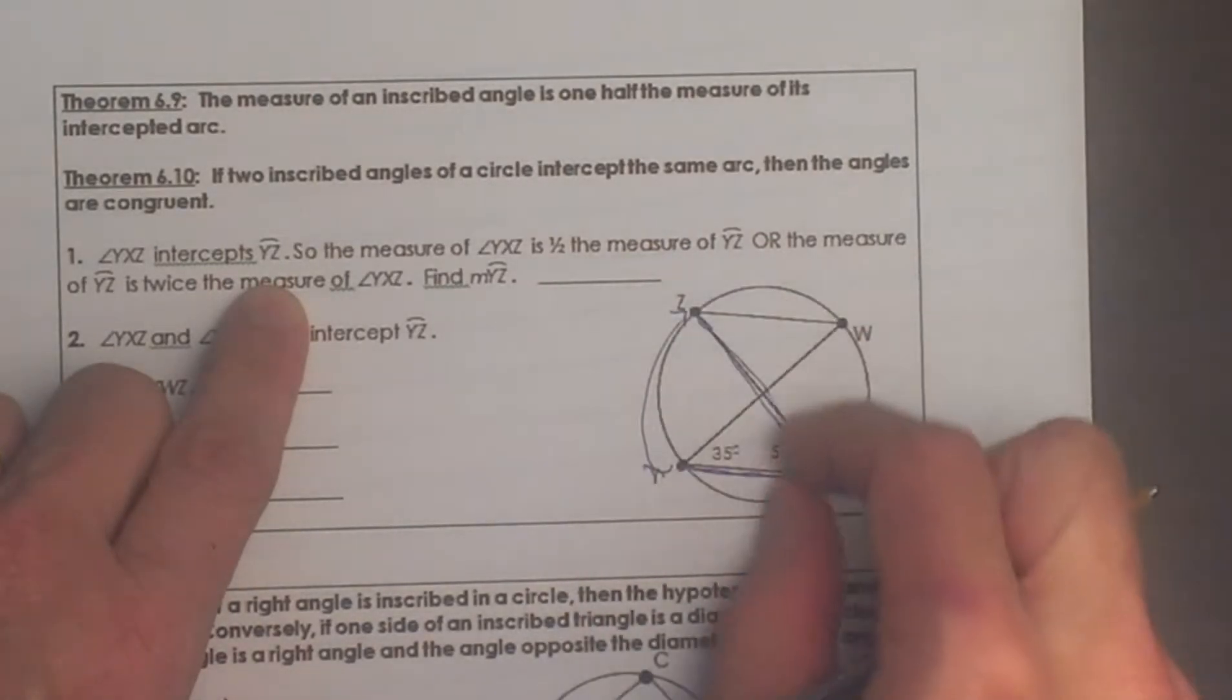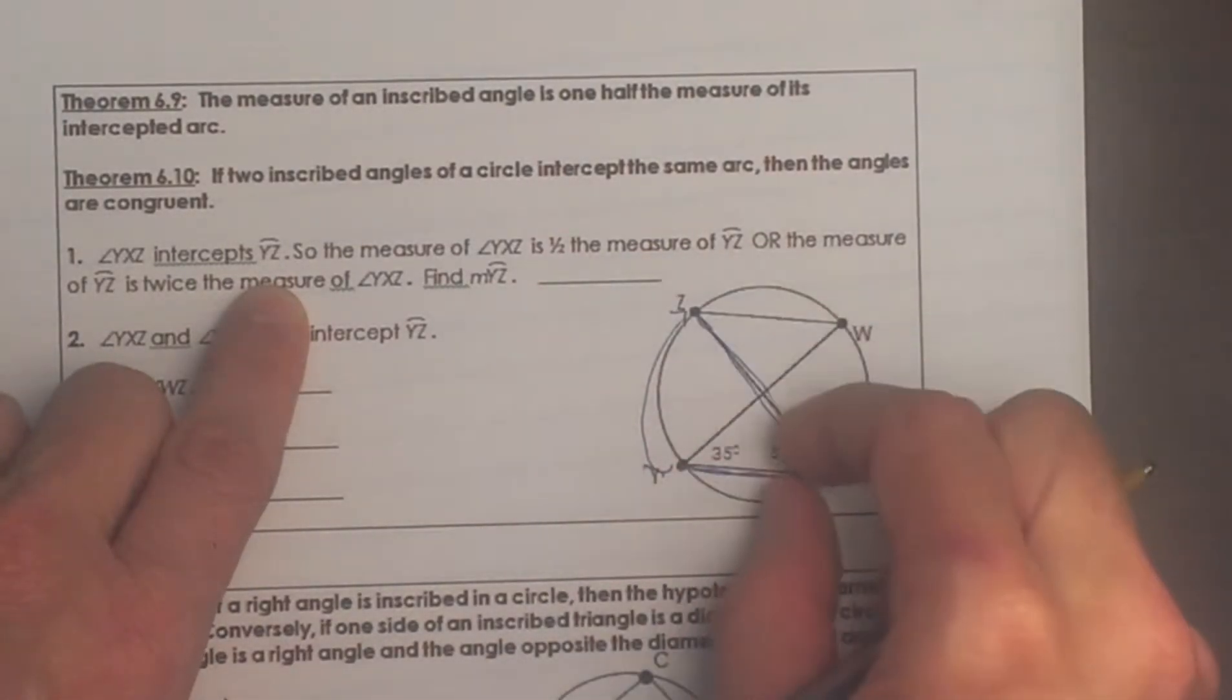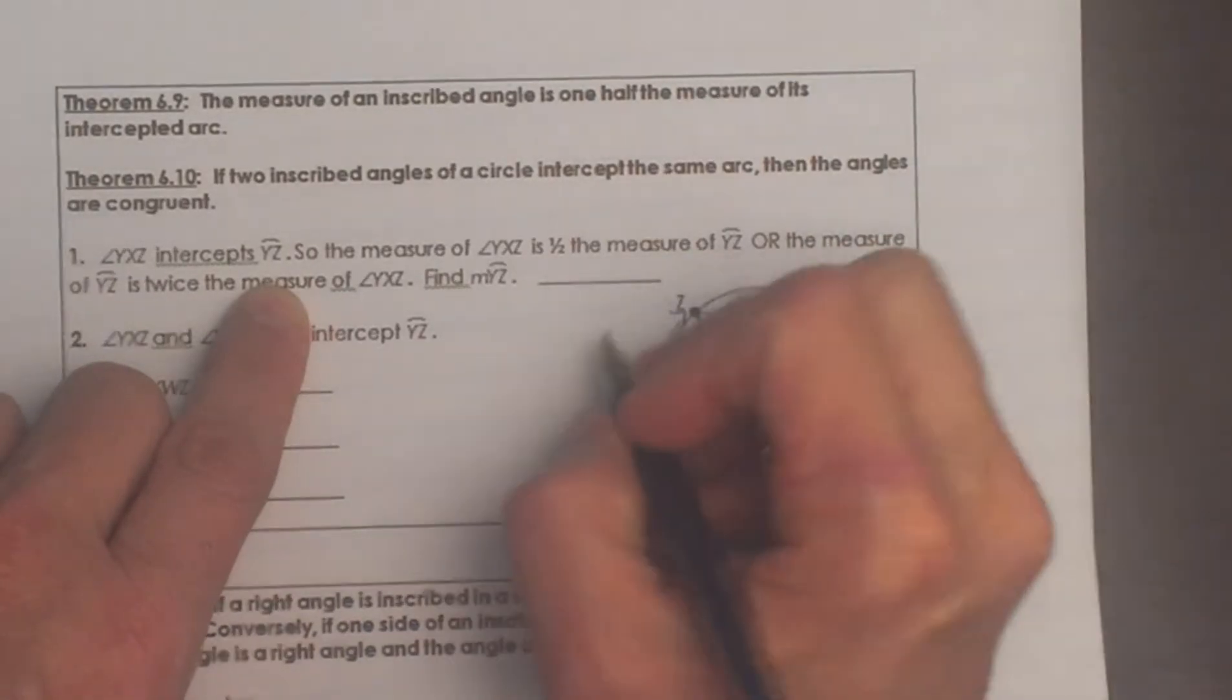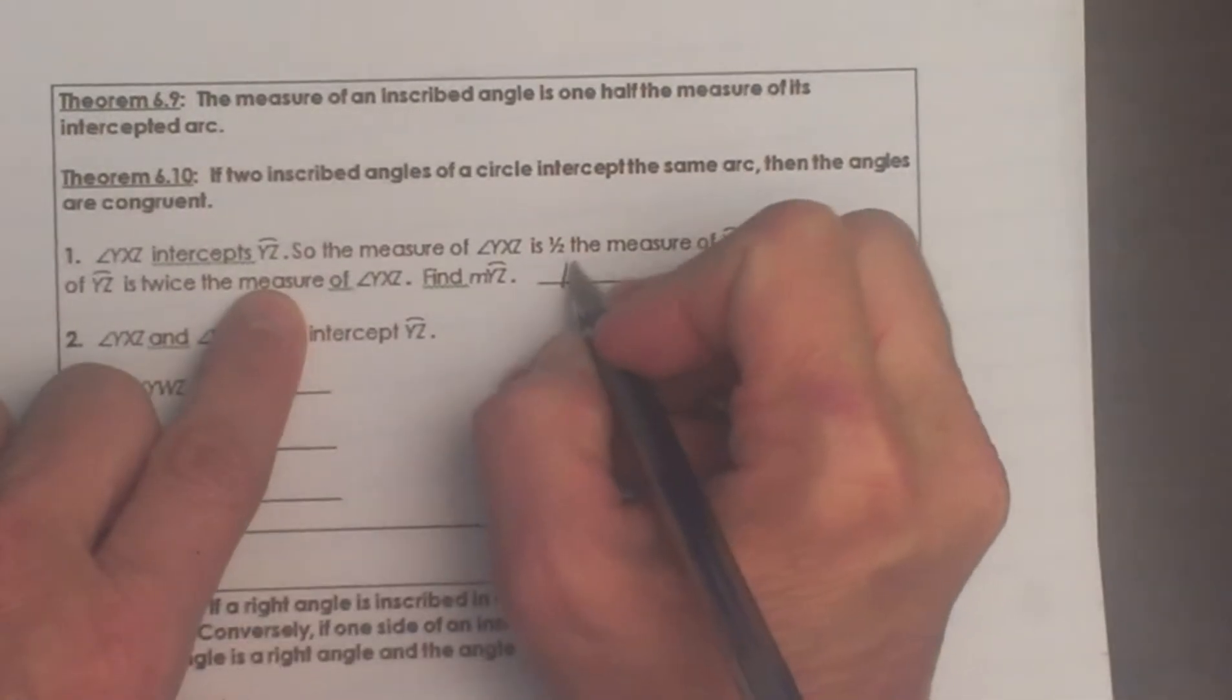So if we know this is 50, the theorem says that the angle is half the arc. So I am going to double it. So that is going to be 100 degrees. So that is how I find that angle.